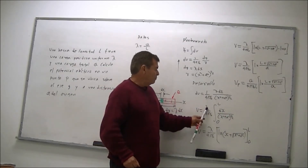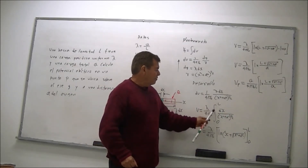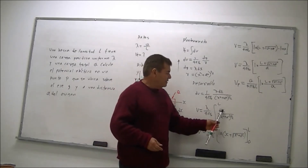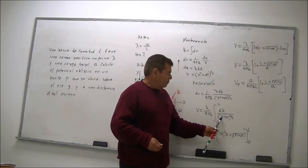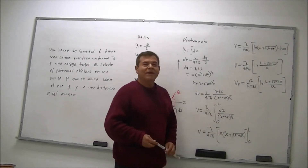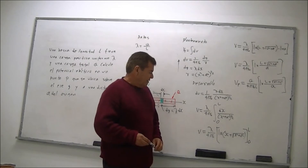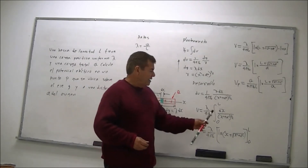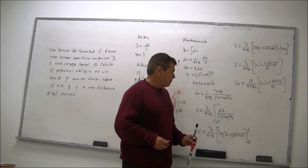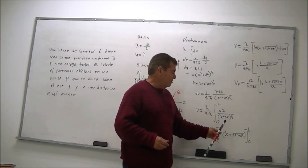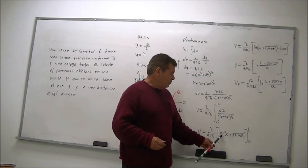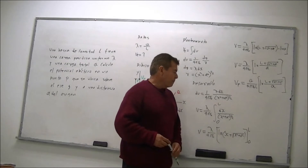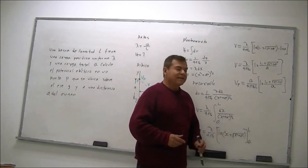Integrando, nos queda lambda sobre 4πε₀ por la integral, que es la longitud de la barra, por dX sobre (X² + A²)^(1/2). Integrando, por la fórmula nos da logaritmo natural de X más raíz de X² + A², evaluado desde 0 hasta L.